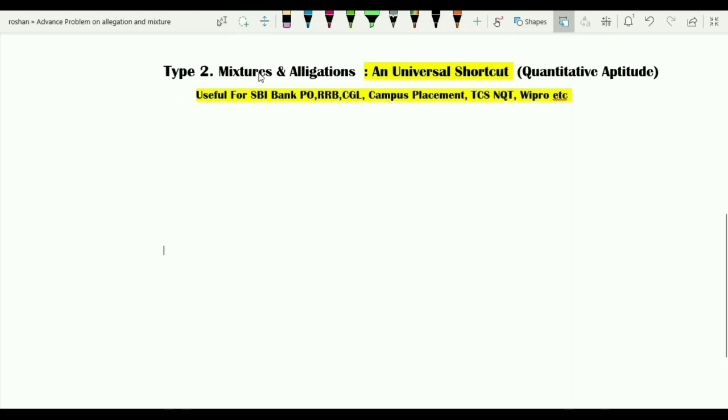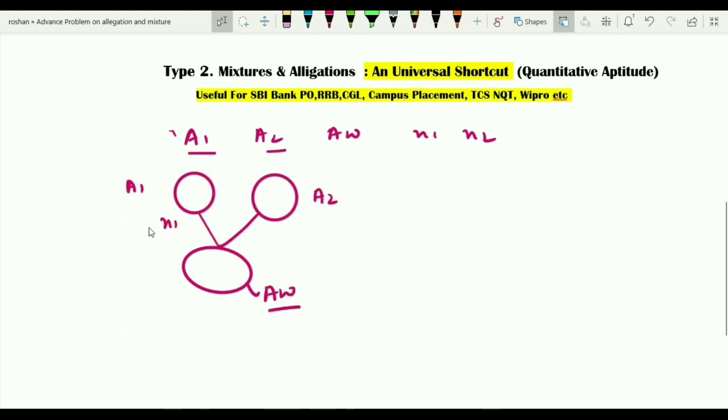So five terms which I have with me: I call them as A1, A2, AW, N1, N2. What are these terms? I hope you guys understand that this allegation will be used in a situation where two things are mixed together to form the third one. Whenever this kind of situation will occur, always call this one as A1, second thing is called as A2. The mixture is always called as AW. Obviously the quantity of the first one is N1 and the quantity of the second is N2.